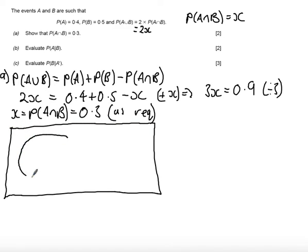So there's the whole set. We're going to call this set here A. We're going to call this set here B. Now remember the key to this diagram is the intersect. So the intersect we've just found is 0.3.